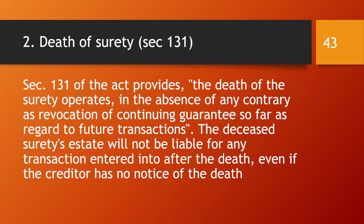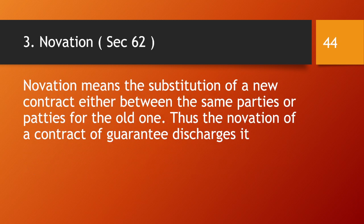The next method of discharge is death of the surety. Section 131 provides that the death of the surety operates, in the absence of any contrary contract, as revocation of a continuing guarantee as far as future transactions are concerned. The deceased surety's estate will not be liable for any transaction entered into after the death, even if the creditor has no notice of the death. Death itself is a significant event and does not require a formal notice.